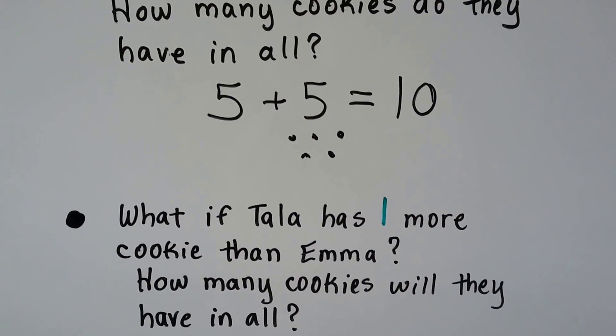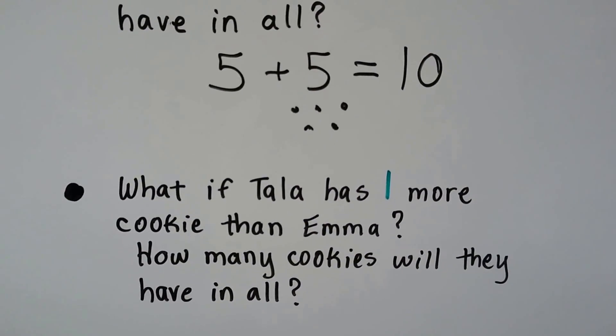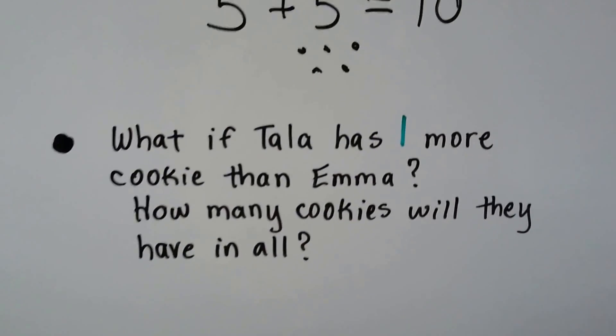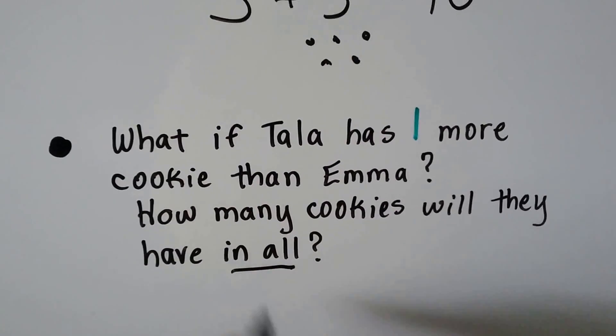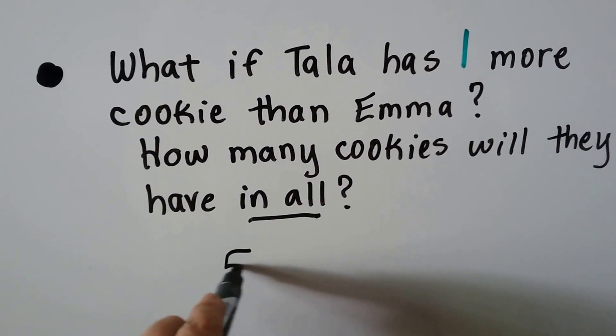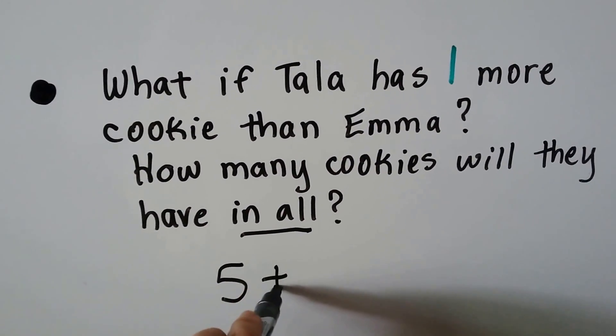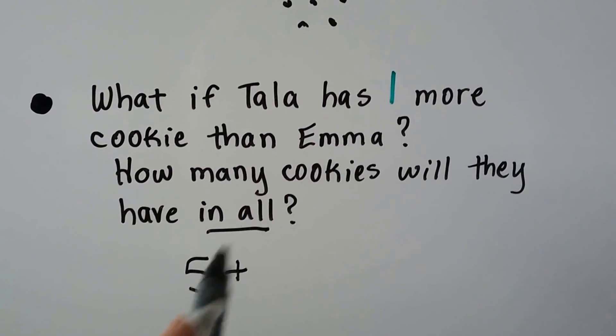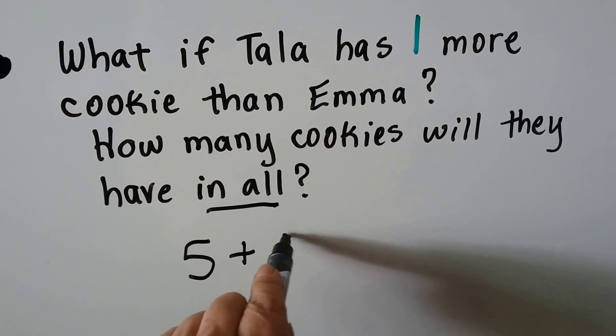Now, what if Tala has one more cookie than Emma? How many cookies would they have in all? So it says in all, so we know we have to add. So we know five is how many Emma has. We're adding. And if Tala has one more than Emma, well, she must have six, right?